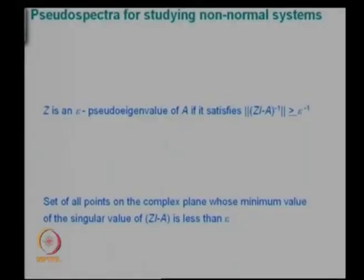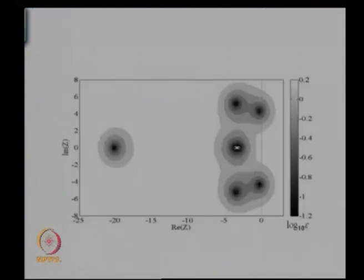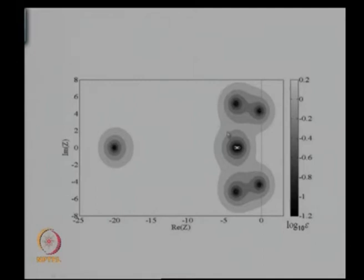The way to compute pseudo-spectra is to find the set of all points on the complex plane whose minimum singular value of (zI minus A) is less than some epsilon. You calculate the eigenvalues — these dots are the eigenvalues. Then instead of satisfying (A minus zI) equals 0 exactly, you say the norm of (A minus zI) is less than epsilon. You draw the epsilon-contours for z — those are these contours. The eigenvalues themselves can be on the left half-plane for the evolution operator, but the pseudo-eigenvalues can spill to the right half-plane.